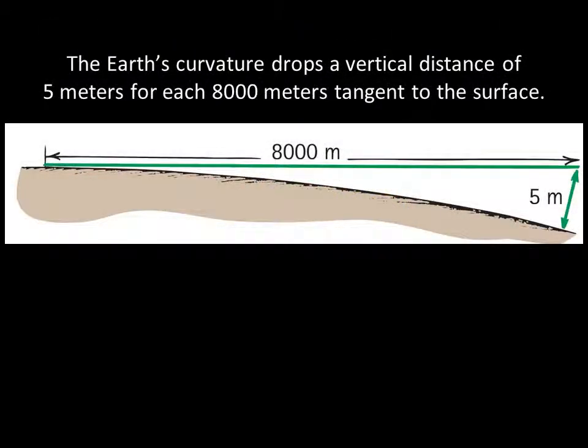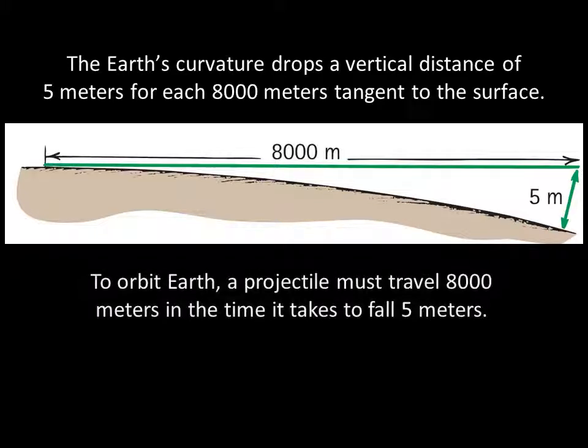Here's another way of seeing it. The Earth's curvature drops a vertical distance of 5 meters for each 8,000 meters tangent to the surface. So to orbit Earth, a projectile must travel 8,000 meters in the time it takes to fall 5 meters.